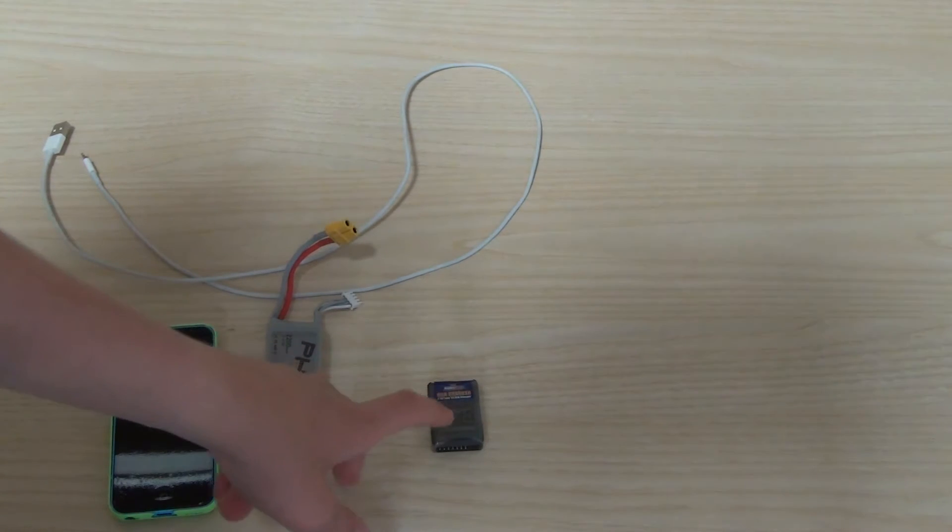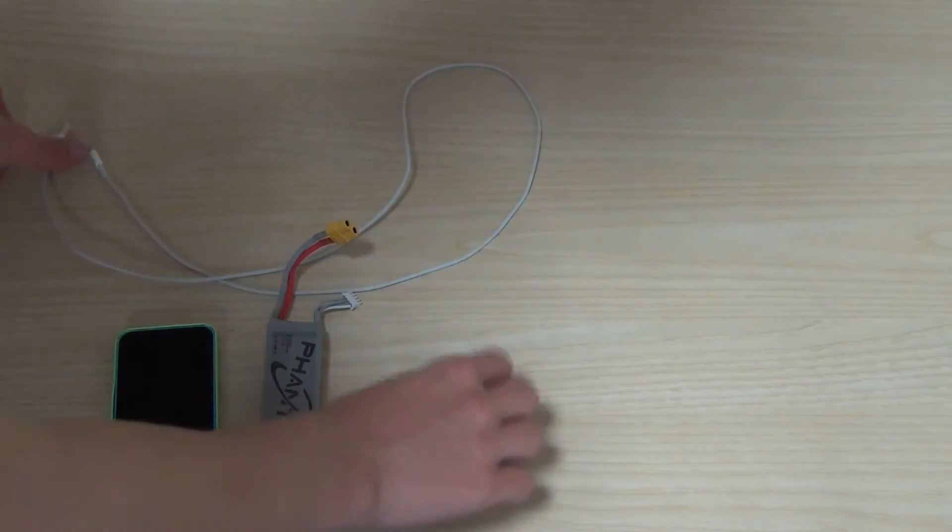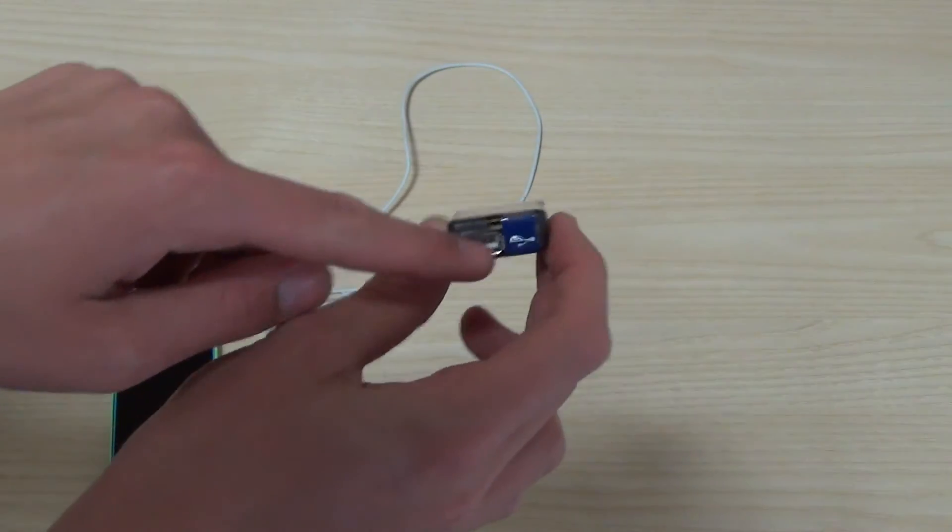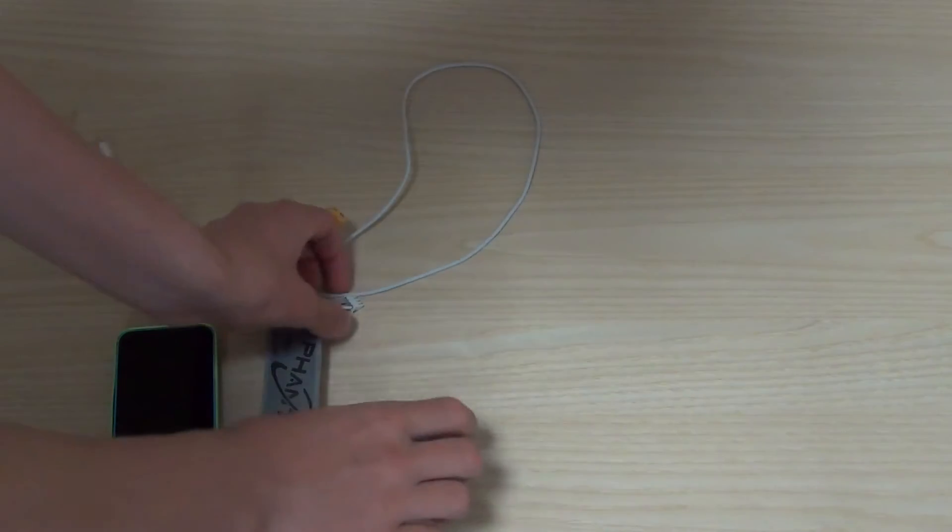It tells you the cell, how many volts each cell has and the total voltage of all the cells, and it also has a very handy little USB outlet there. So I'm going to show you how it works and I'm going to hopefully charge my iPhone with it.